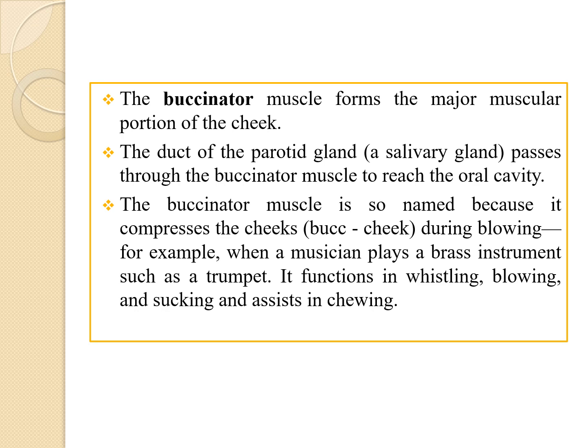The next is the buccinator muscle. It forms the major muscular portion of the cheek. The duct of the parotid gland, which is a salivary gland, passes through the buccinator muscle to reach the oral cavity. The buccinator muscle is so named because it compresses the cheeks — 'bucc,' spelled B-U-C-C, means cheek. It compresses the cheeks during blowing, for example when a musician plays a brass instrument, and also functions in chewing.